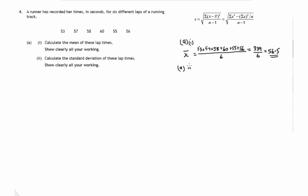Usually a little table of results is okay, where we put in the first column the data points themselves: 53, 57, 58, 60, 55 and 56. So that's the first column.